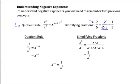Now that we've refreshed those two concepts, let's look at some negative exponents. Consider x squared over x to the fifth using the quotient rule. Subtracting the exponents gives us 2 minus 5, which gives an exponent of negative 3. Now let's simplify this the way we would a fraction, to see what x to the negative third power actually is.